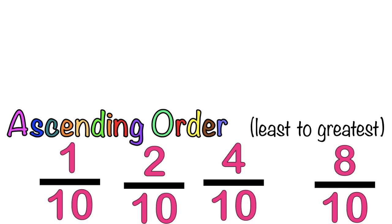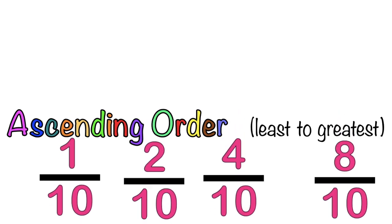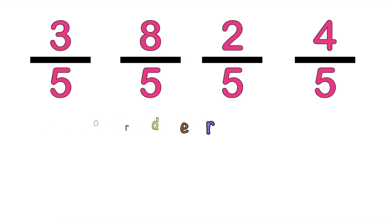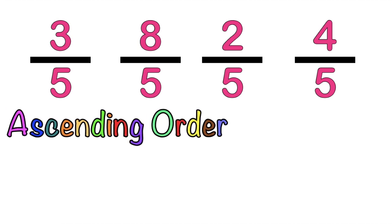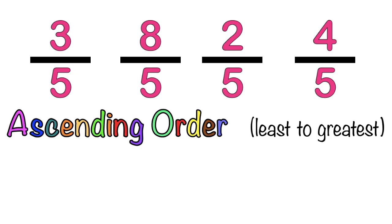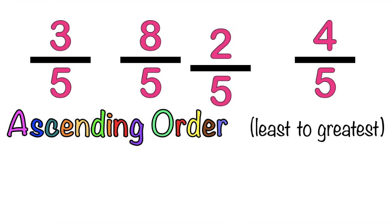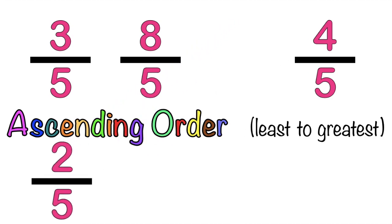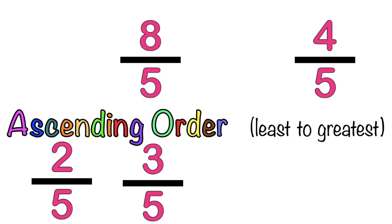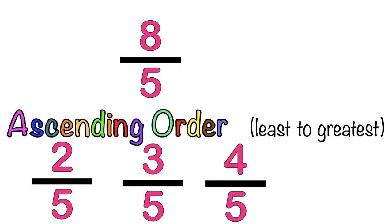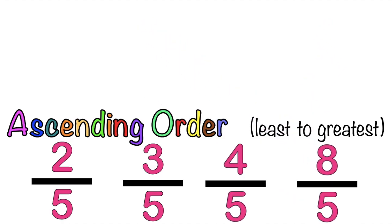When you say ascending order, that is from least to greatest. How about if we have this? Let's arrange these fractions in ascending order — least to greatest or smallest to biggest. Which of these fractions is the smallest? It's 2-fifths. The next one is 3-fifths. The third one is 4-fifths. And obviously, the last one is 8-fifths. This fraction is arranged in ascending order.